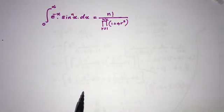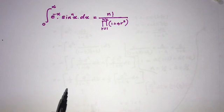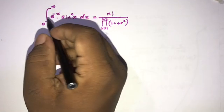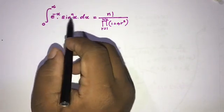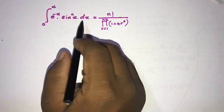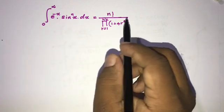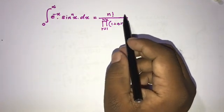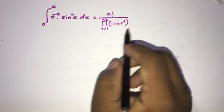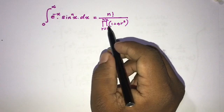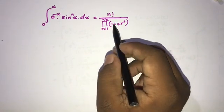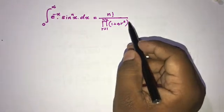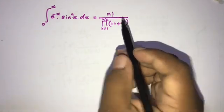Welcome to the Mathematics MI channel. Today we are going to solve another interesting integral: the integral from zero to infinity of e to the minus x times sine to the n of x dx, which equals n factorial over a series product of i equals 1 to n over 2 of 1 plus 4r squared. Now, how to begin?